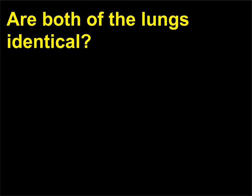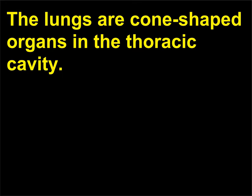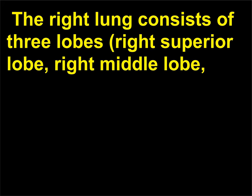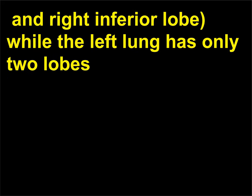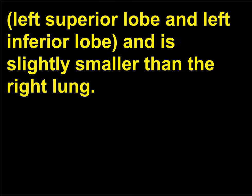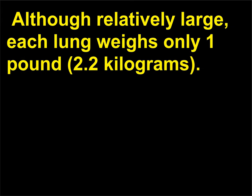Are both lungs identical? The lungs are cone-shaped organs in the thoracic cavity. The right lung consists of three lobes — right superior lobe, right middle lobe, and right inferior lobe — while the left lung has only two lobes: left superior lobe and left inferior lobe, and is slightly smaller than the right lung. Although relatively large, each lung weighs only one pound (approximately 0.45 kilograms).